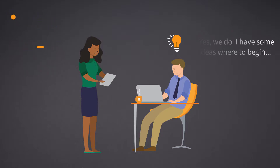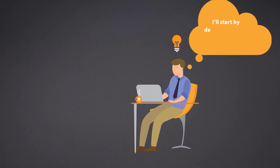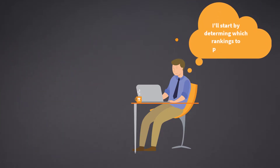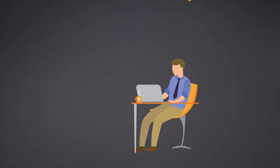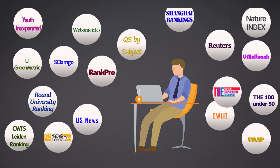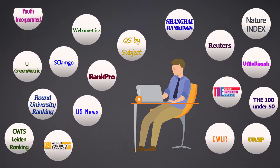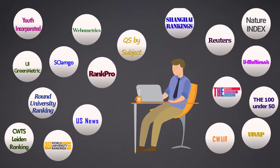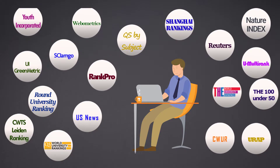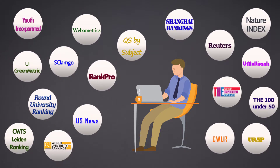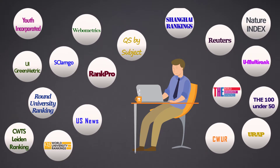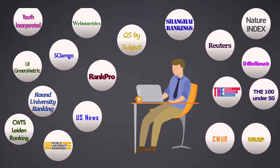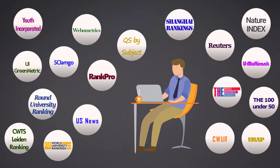To tackle this project, Lee first needs some background information about rankings so he can determine which rankings to prioritize. With over 20 global university ranking reports or organizations alone, and each with its own methodology, data sources, and set of indicators, Lee needs to zero in on which align best with his university's focus and priorities.